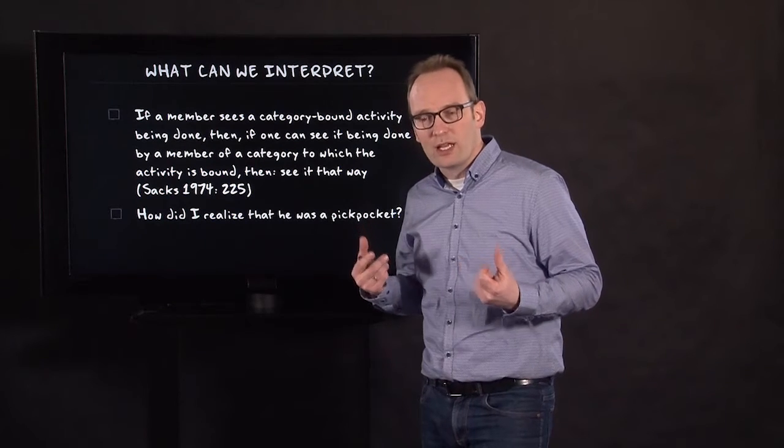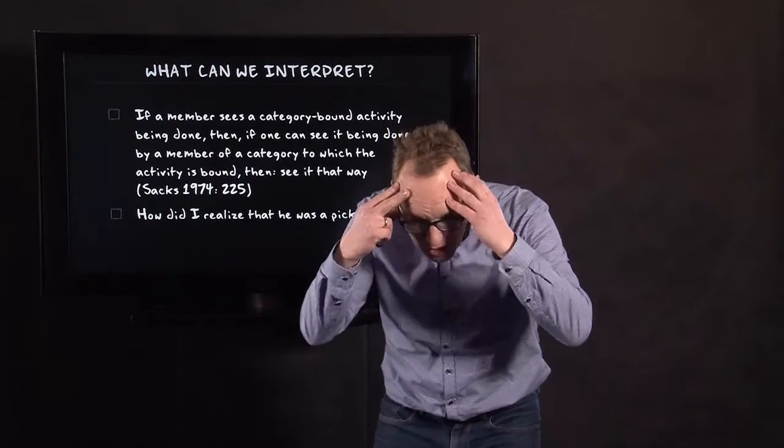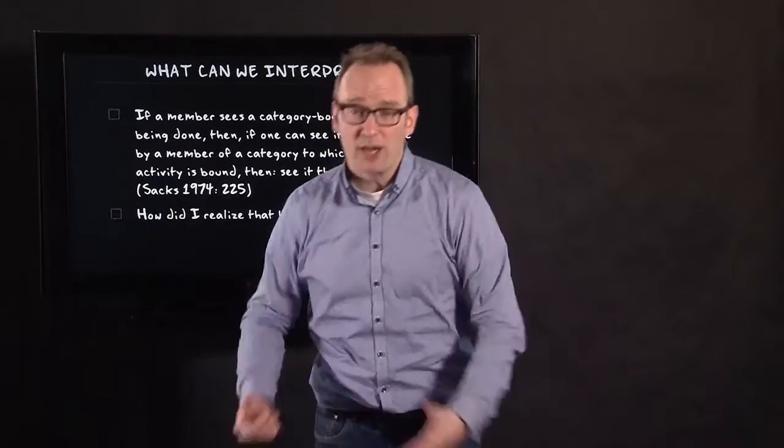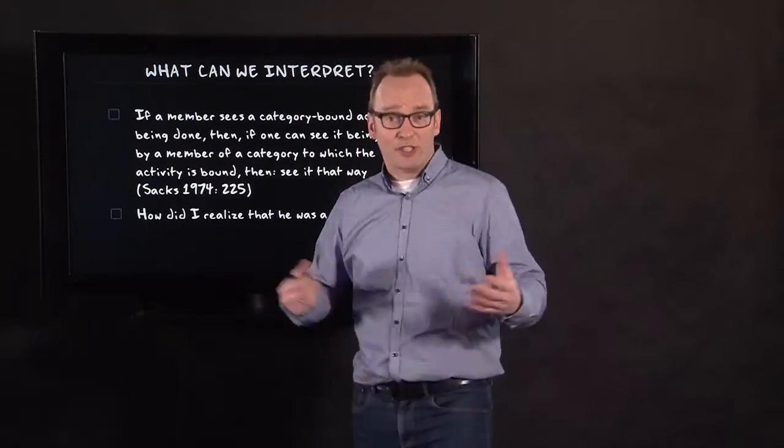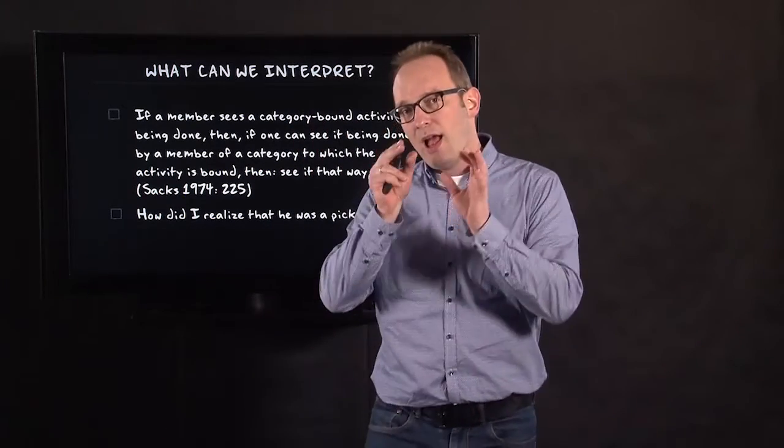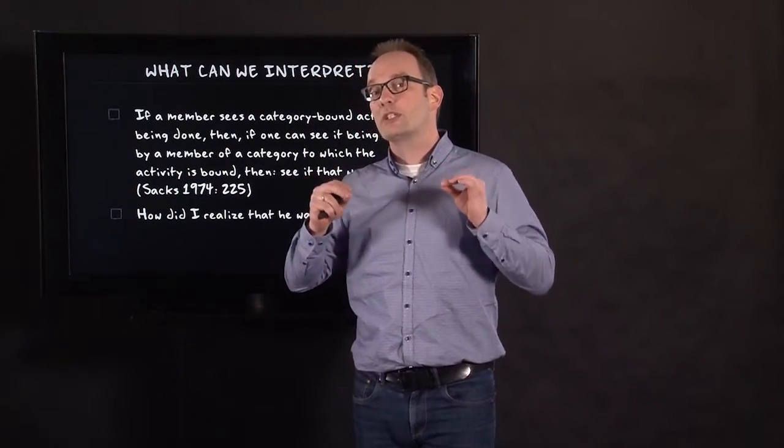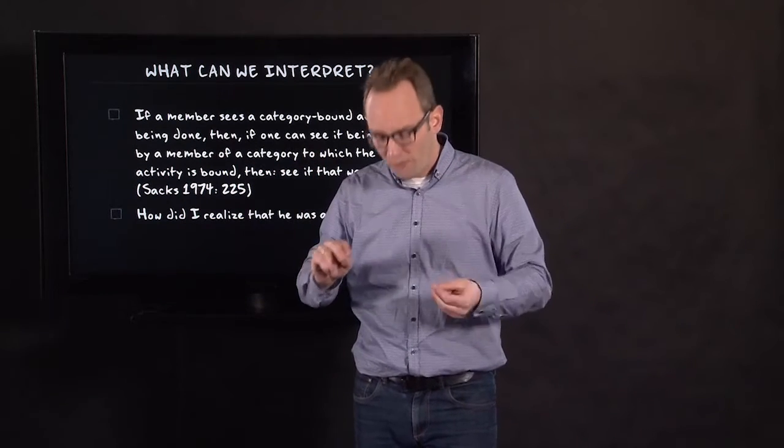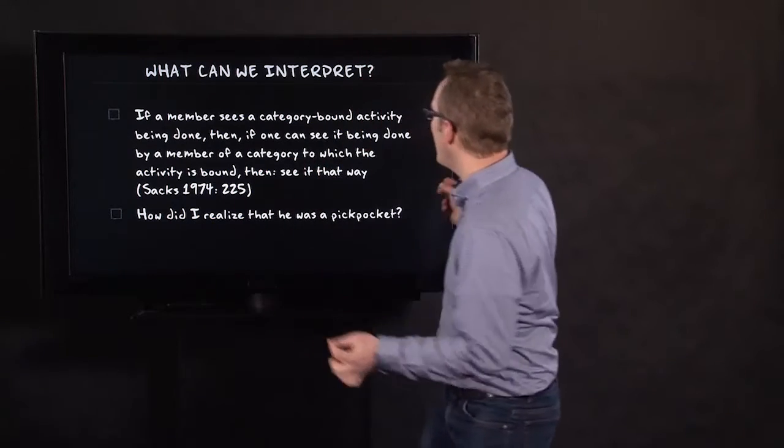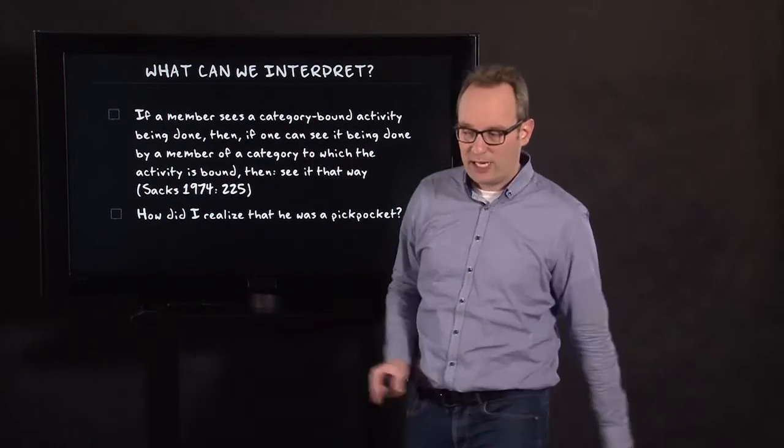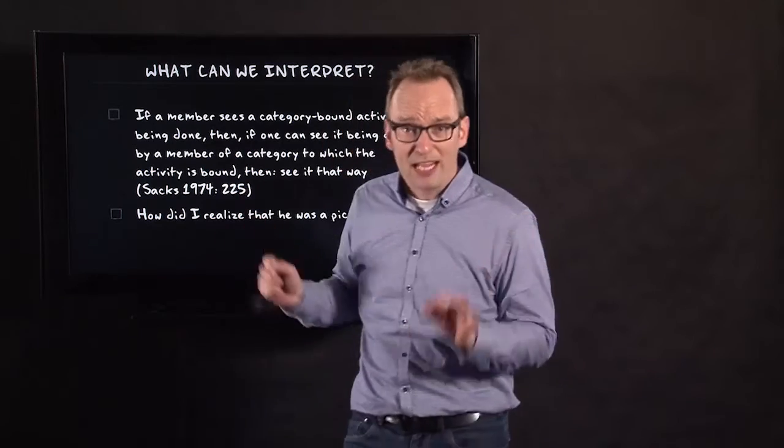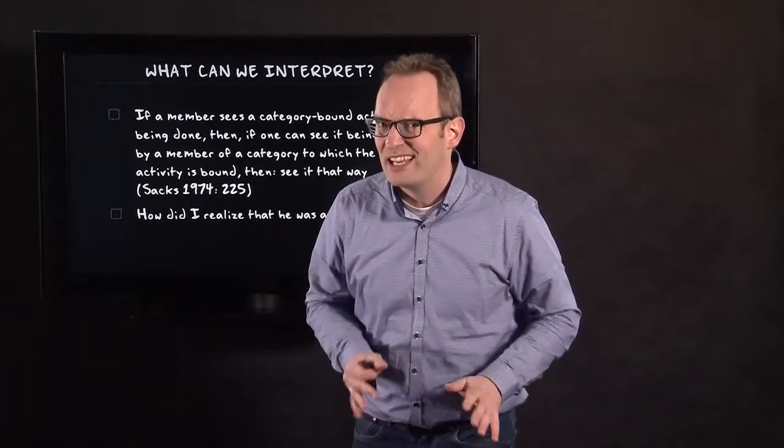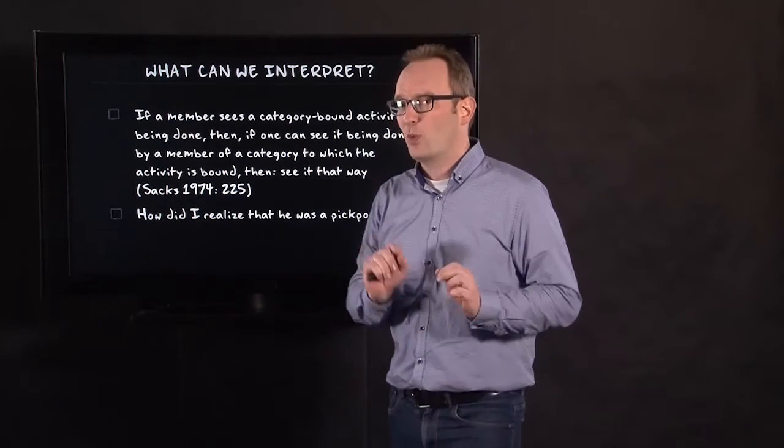And then Carlin all of a sudden realized: this man has to be a pickpocket. But how can I conclude this? I'm a sociologist. I'm not allowed to have such stereotypes. How can I conclude this? And what he does is he uses both common sense as well as theory. First he uses common sense. Why? Because he sees a category-bound activity: someone looking at bags of people unknown to him and standing really close to those people. That's weird.